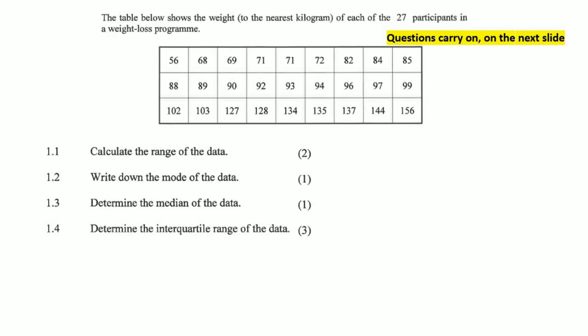The table below shows the weight to the nearest kilogram of 27 participants in a weight loss program. Calculate the range. The range is always the highest minus the lowest, which would be 156 minus 56, which is 100.